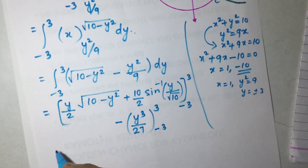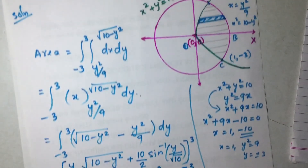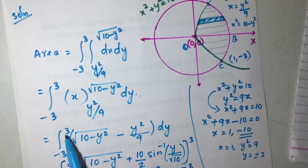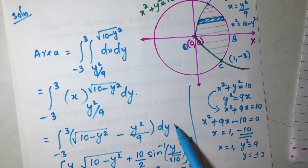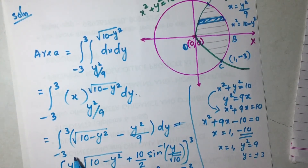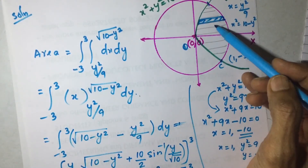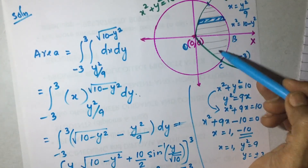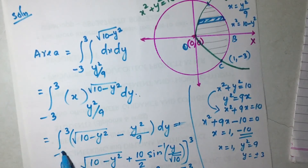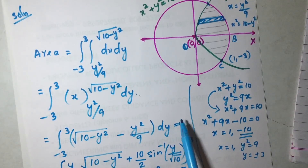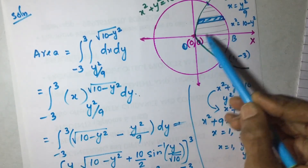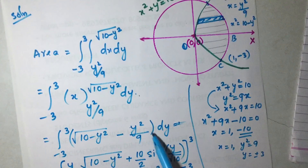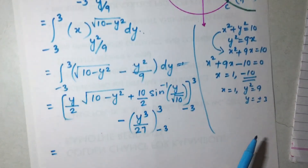Instead of integrating from −3 to +3, we can use symmetry: since the areas above and below the x-axis are equal, we can write the integral as 2 times the integral from 0 to 3. So the expression becomes 2 × ∫ from 0 to 3 of [√(10 − y²) − y²/9] dy.